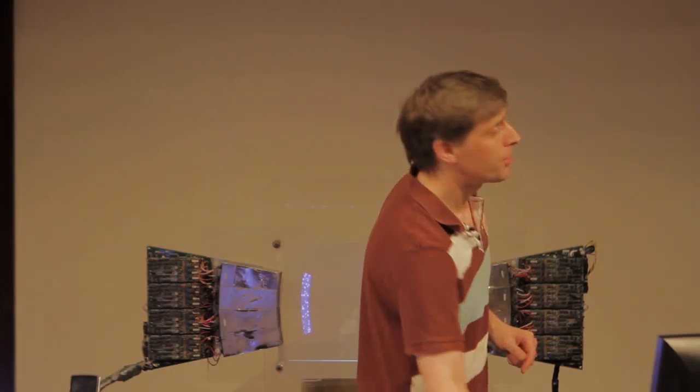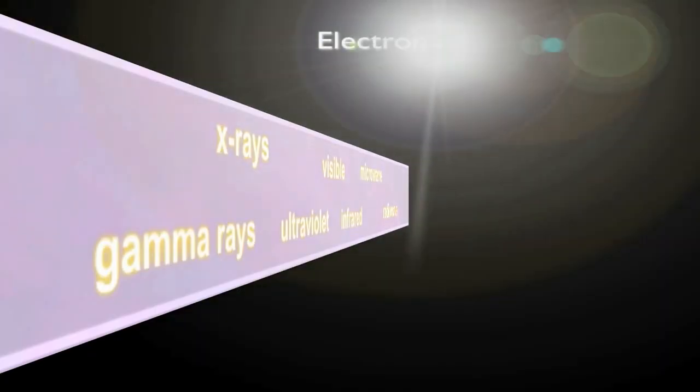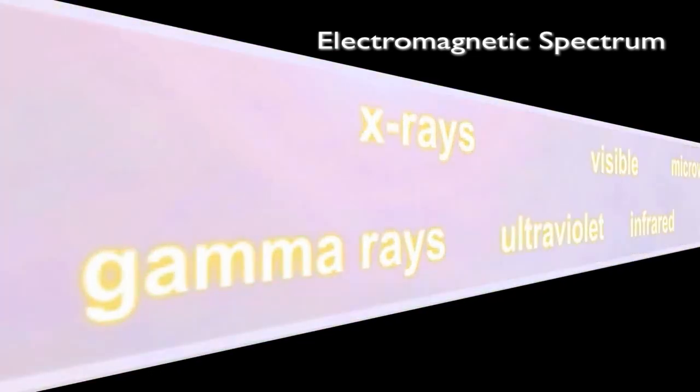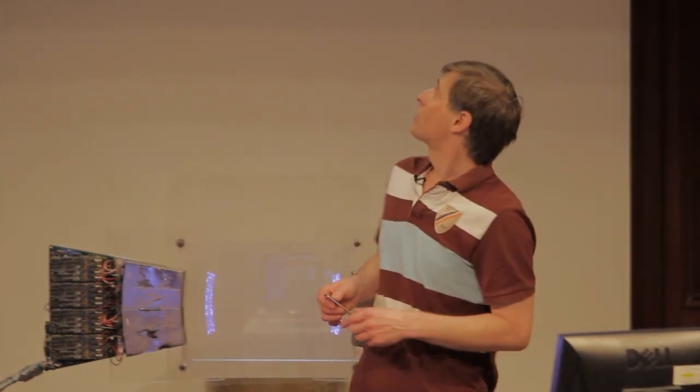Now so far we've been concentrating on one end of the electromagnetic spectrum. We've been looking at X-rays and at gamma rays. What other parts of the electromagnetic spectrum are useful to us?